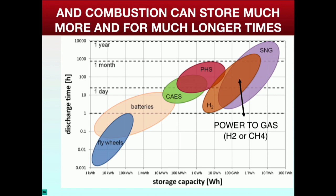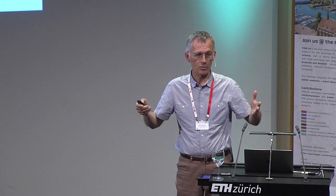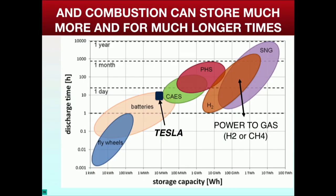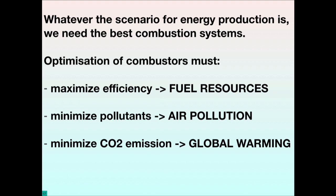When you look at the numbers associated to energy storage, you see that combustion is winning again against all other ways. Here you have the amount of energy you can store on a log scale, and the time you can keep this energy. Batteries — even the largest in the world produced by Tesla — can store a little less than 10 megawatts for maybe one month maximum. But if you put H2 or methane in a big tank, you can keep it for two years. From here to there, you have five orders of magnitude difference. So combustion will come back to store renewable energy.